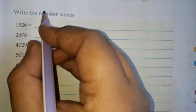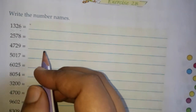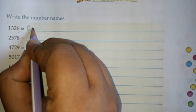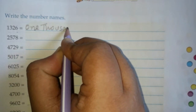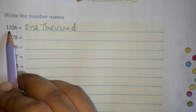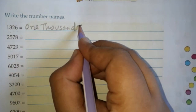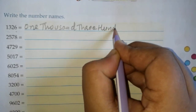We write the numbers accordingly. We have to write in alphabets — we have to write their names. 1 is on the thousands place, so we write one thousand. Next is 3, which is on the hundreds place, so we write three hundred.